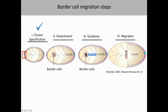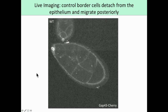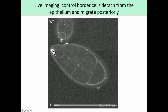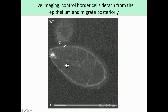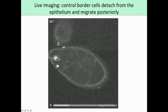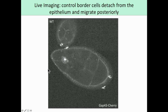To address these questions, I utilized a live imaging approach to look at border cell migration occurring in real time. This movie shows what wild-type border cell migration looks like — you're seeing a membrane marker here. In wild-type migration, the cluster forms, it extends protrusions towards the oocyte indicating it is guided, and it completely detaches from the epithelium.